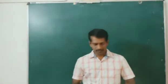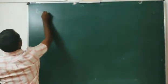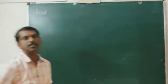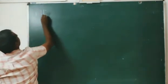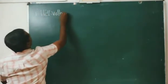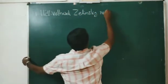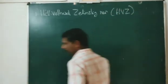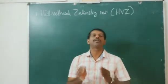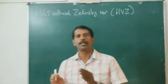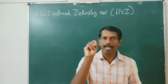Good morning. Today we will look at reactions of carboxylic acid. The first reaction is the Hell-Volhard-Zelinsky reaction, also known as the HVZ reaction. Carboxylic acids containing an alpha hydrogen atom, when treated with chlorine or bromine in the presence of a small amount of phosphorus, will give an alpha-halogenated acid.